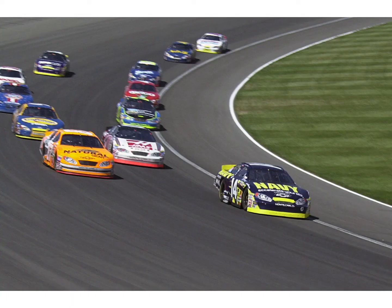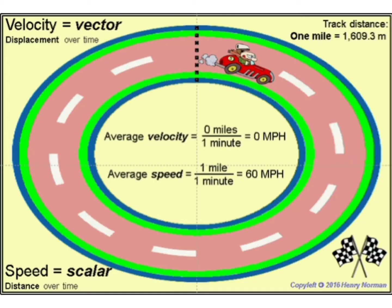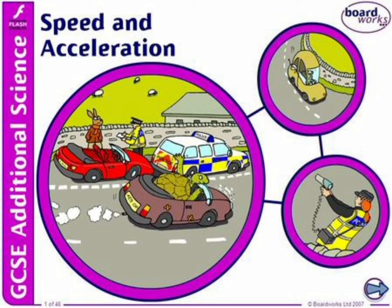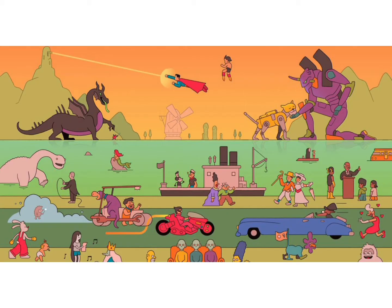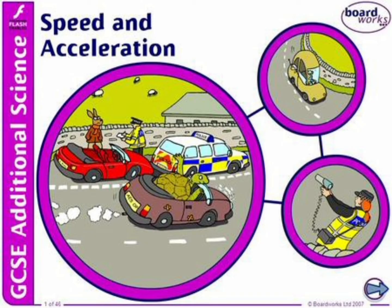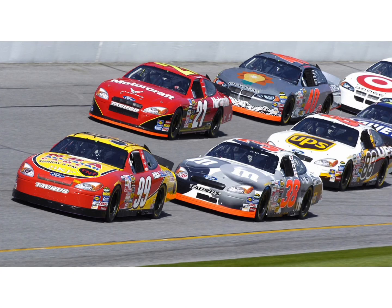Speed and velocity are not always equal in magnitude. In most cases, the magnitude of speed and velocity of a moving body is equal. For example, suppose a boy runs a distance of 100 meters in 50 seconds going from his home to a shop in the east direction in a straight line. The speed of the boy is distance traveled upon time taken: 100 meters upon 50 seconds equals 2 meters per second. The velocity of the body is displacement upon time taken: 100 meters towards east upon 50 seconds equals 2 meters per second towards east.